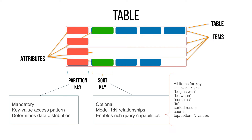You can use the sort key to do queries with range operators like equals, greater than, less than, begins with, contains, and things like that. You want to model your table to support your main access patterns — query something relevant to your application. Don't just pick any partition key because it looks useful. Think about it carefully, and we will talk more about how to model your data in the next video, including tips on choosing a good partition key and sort key. Remember you can only have one item with a particular combination of partition key and sort key.